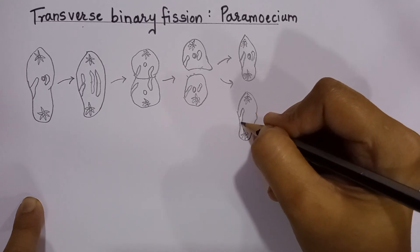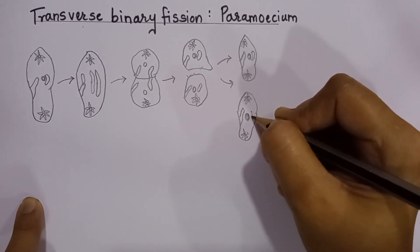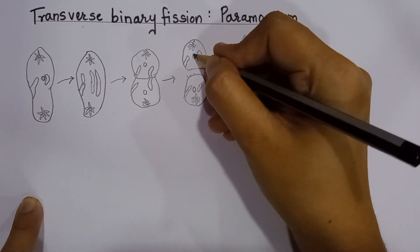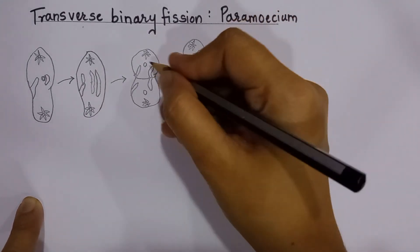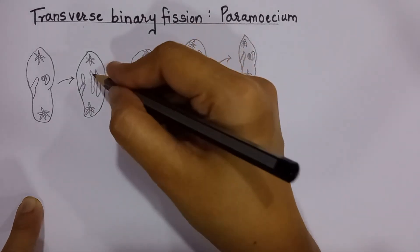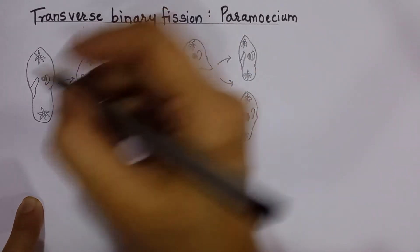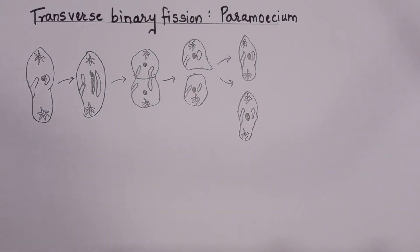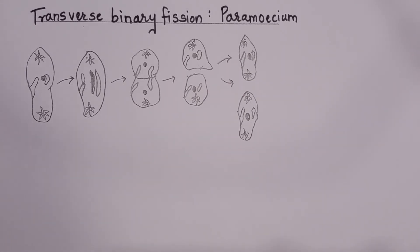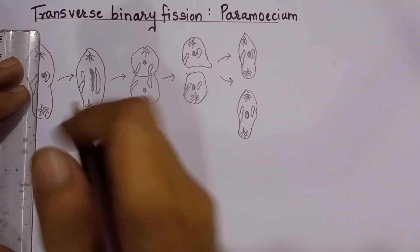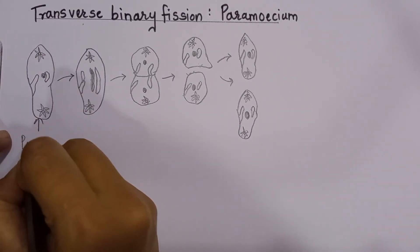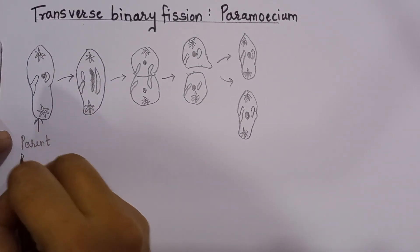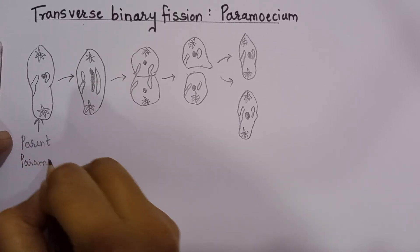Let's color the nucleus part. The drawing is what mainly carries the marks because we don't have much labeling — only two labels: one is 'parent Paramecium' and one is 'daughter Paramecium.' We'll label this as parent Paramecium.